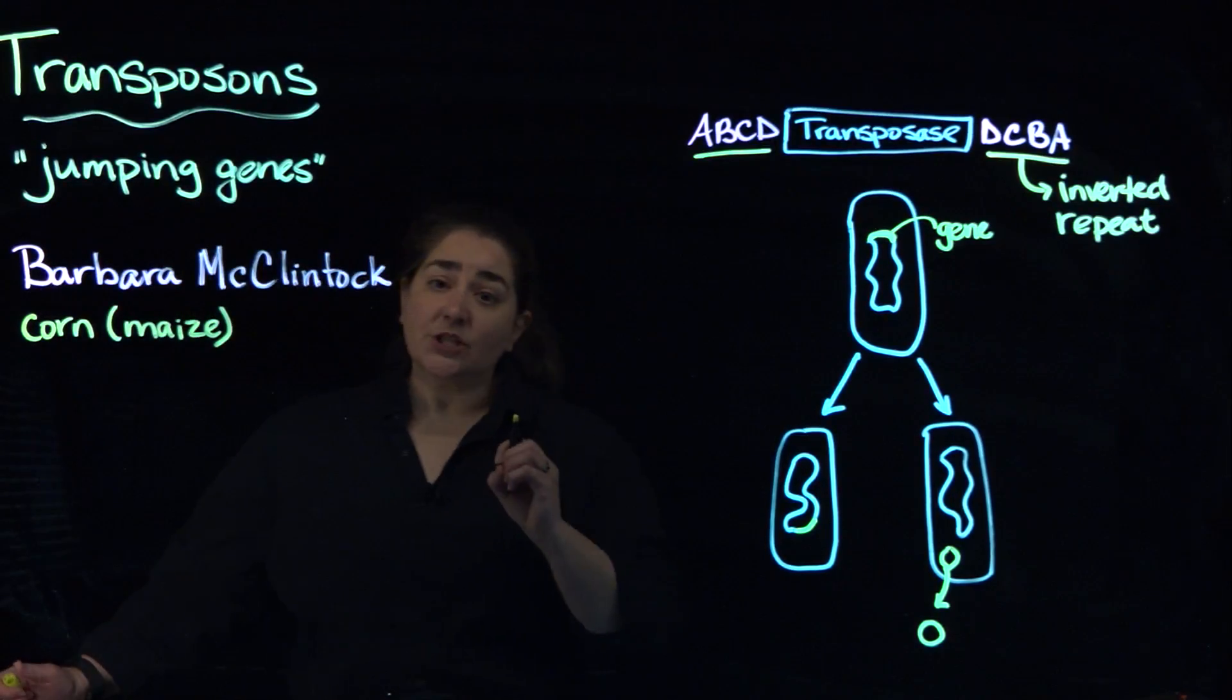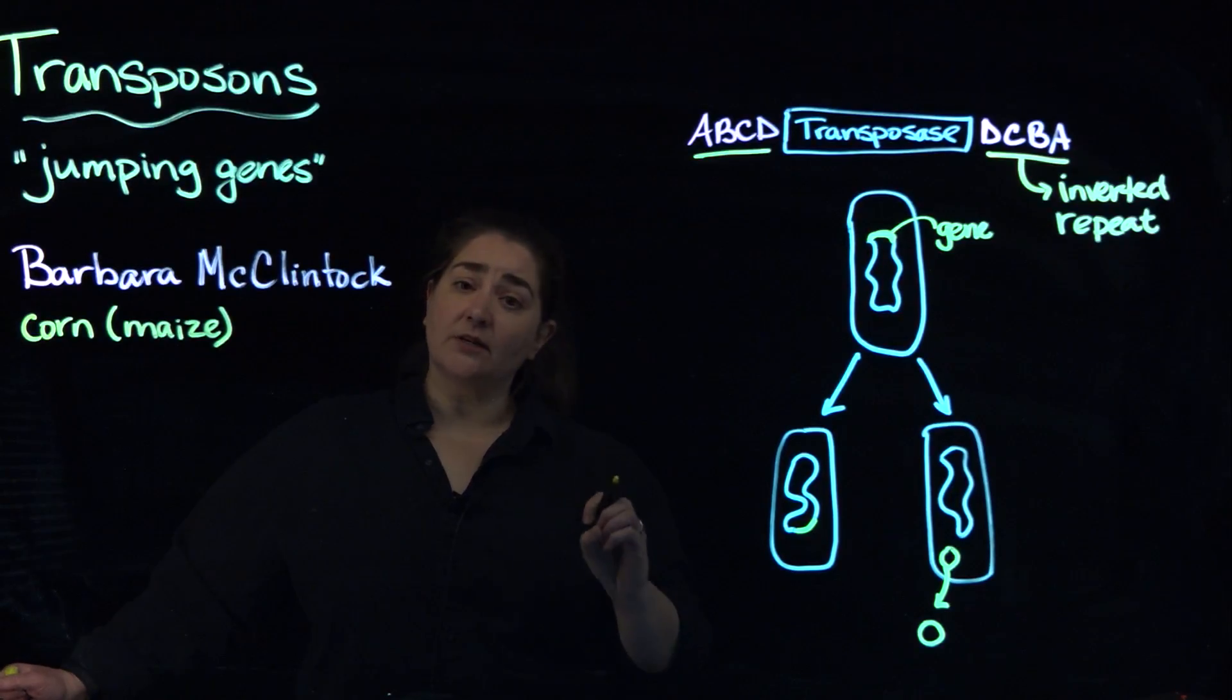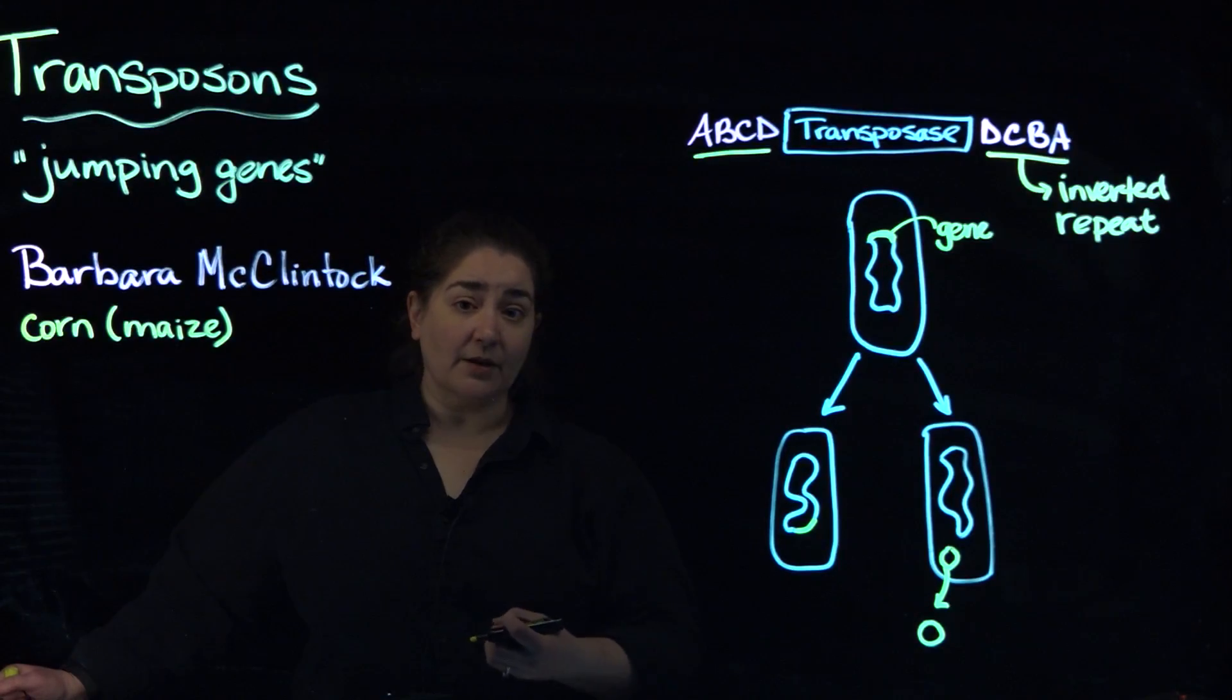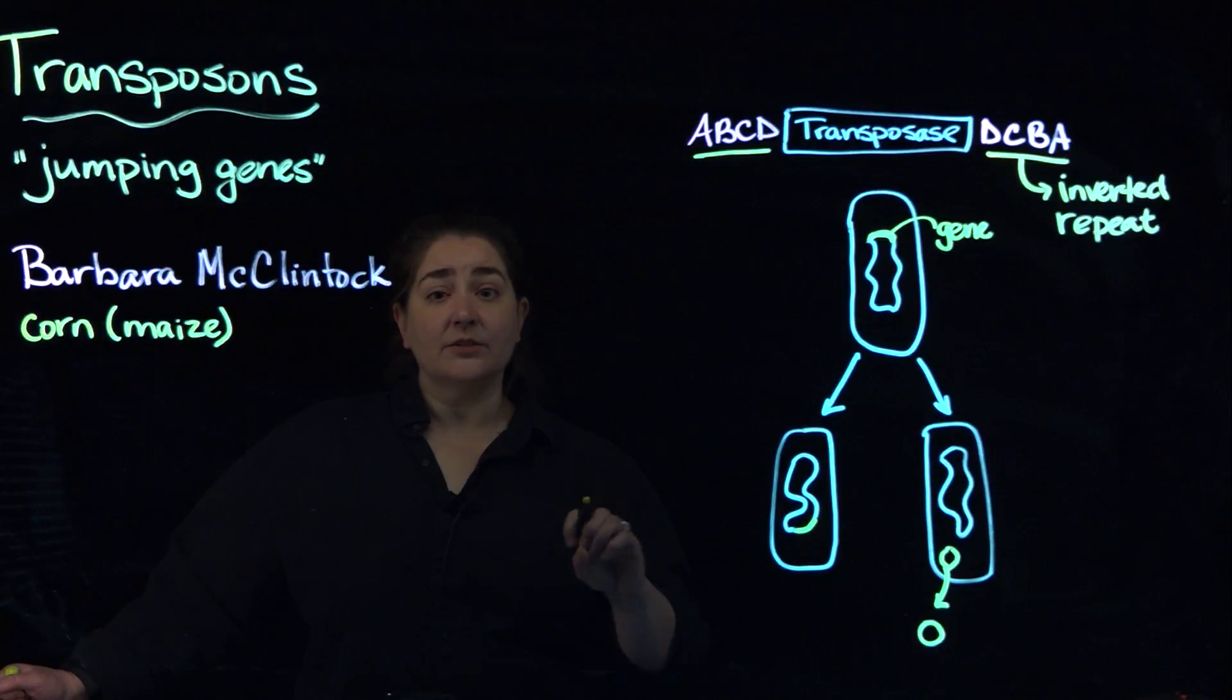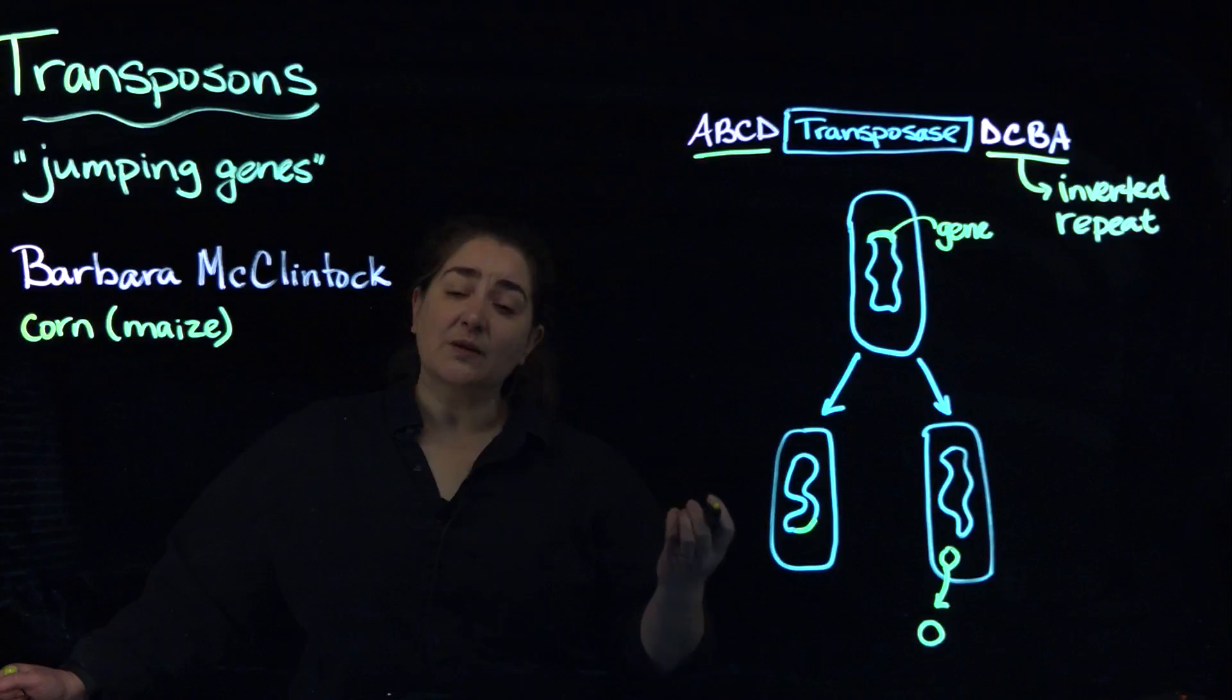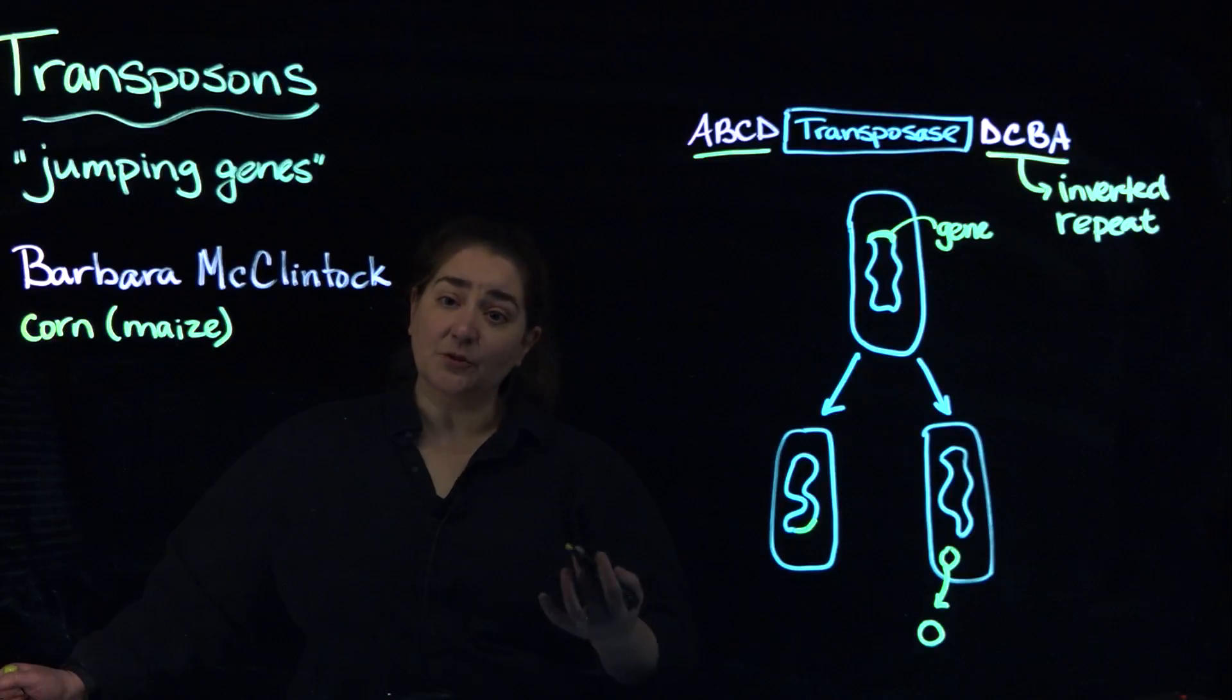But what she was interested in and intrigued by was that with corn, you could see some different colored kernels that would come up. And when you go to the grocery store around Halloween and Thanksgiving time, you've got all that neat harvest corn that has all those different patterns and colors. So instead of just being yellow, you've got some reds and some browns, and you've got some of the corn kernels that are a little mottled and may have multiple colors.